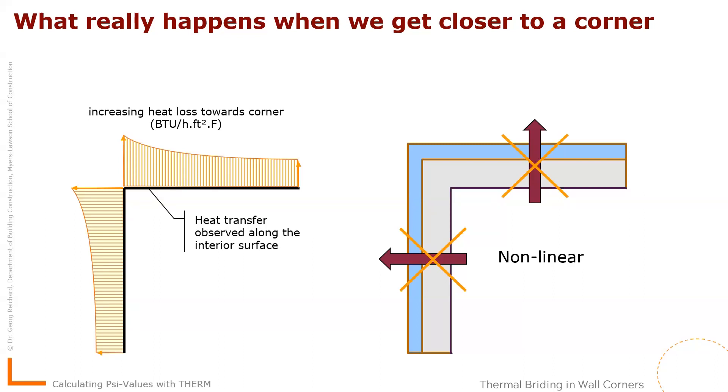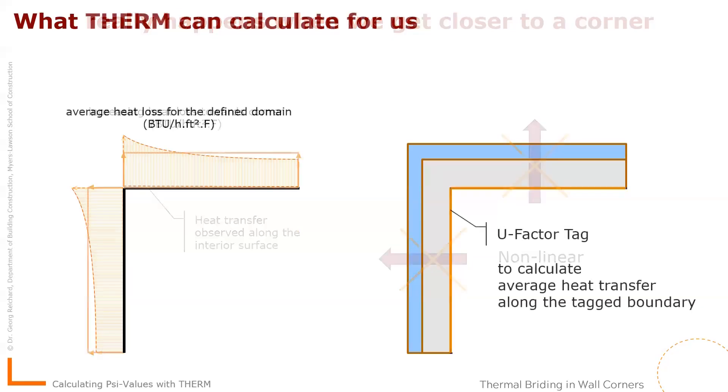So how can we capture that additional loss? Well, this is where THERM comes in. So THERM allows us to define a U tag for a boundary, and with this U tag we can calculate an average heat transfer along the tag boundary. And the average U value in total comes to, because it's now a constant U factor, it becomes in its total the same amount as the real flux, the one that increased towards the corner constituents.